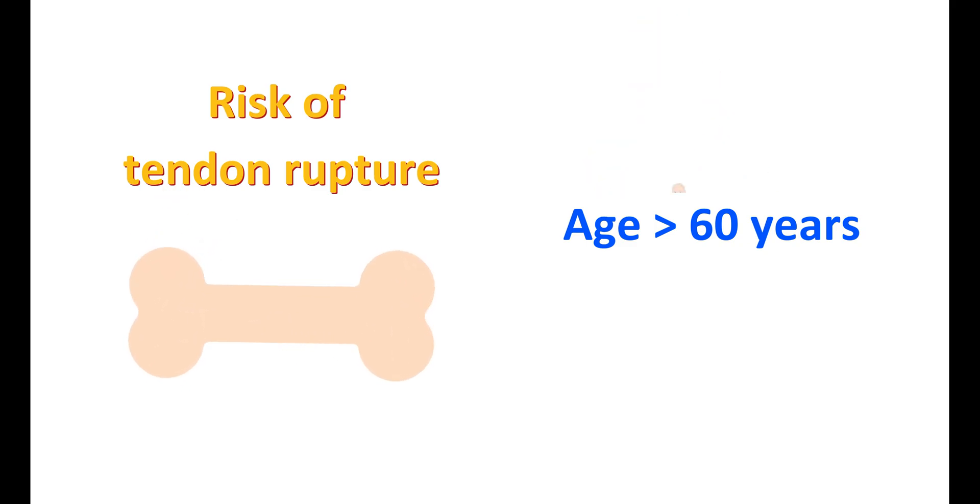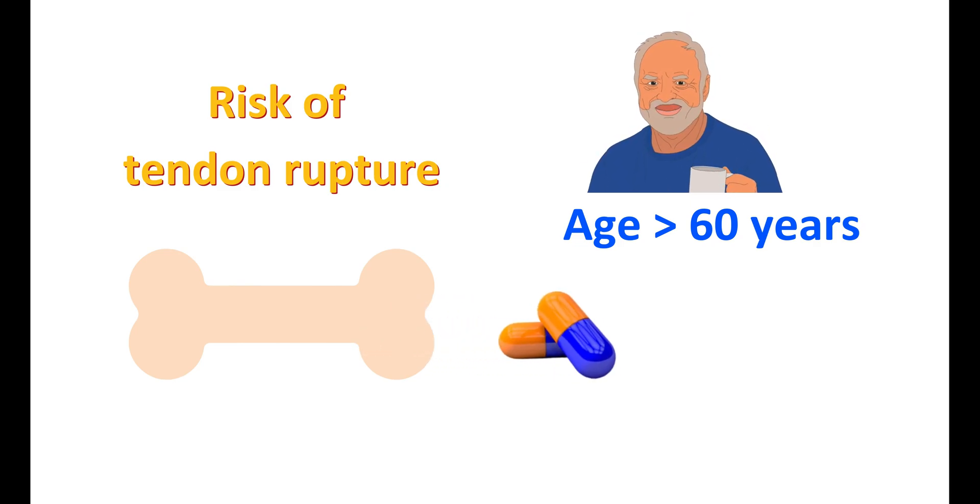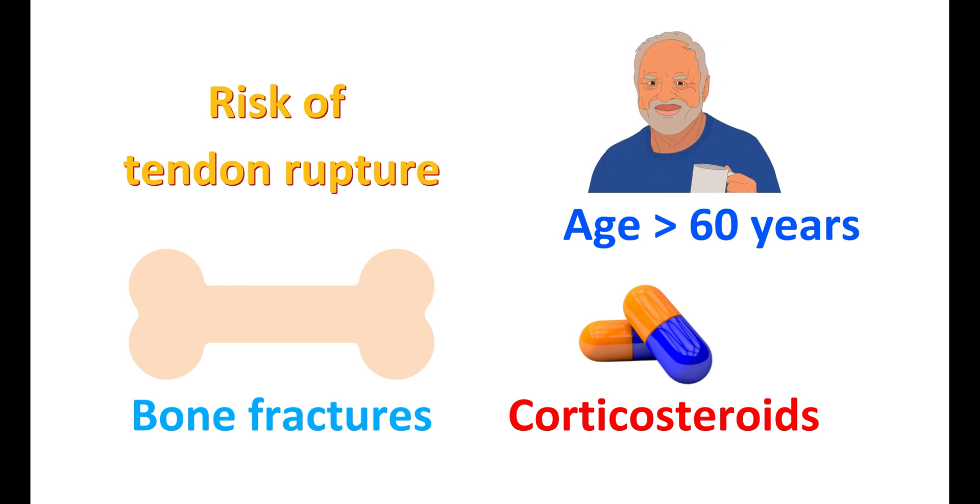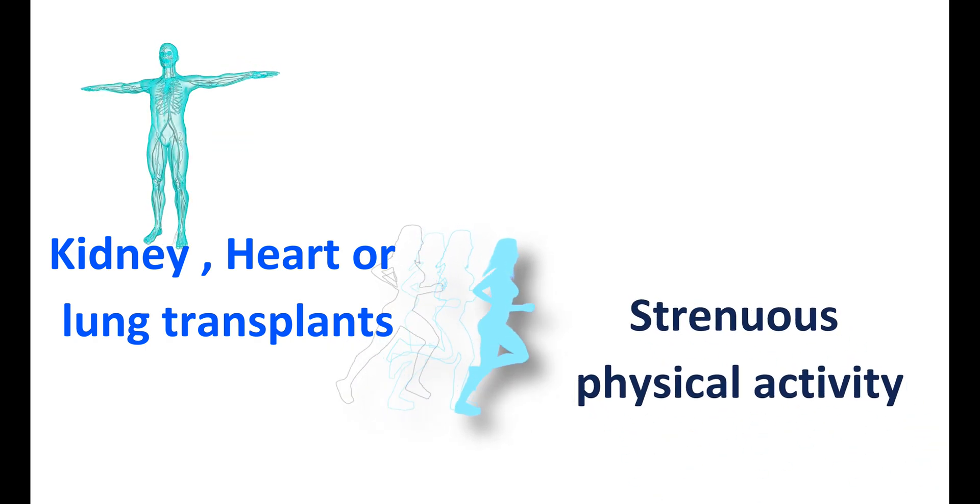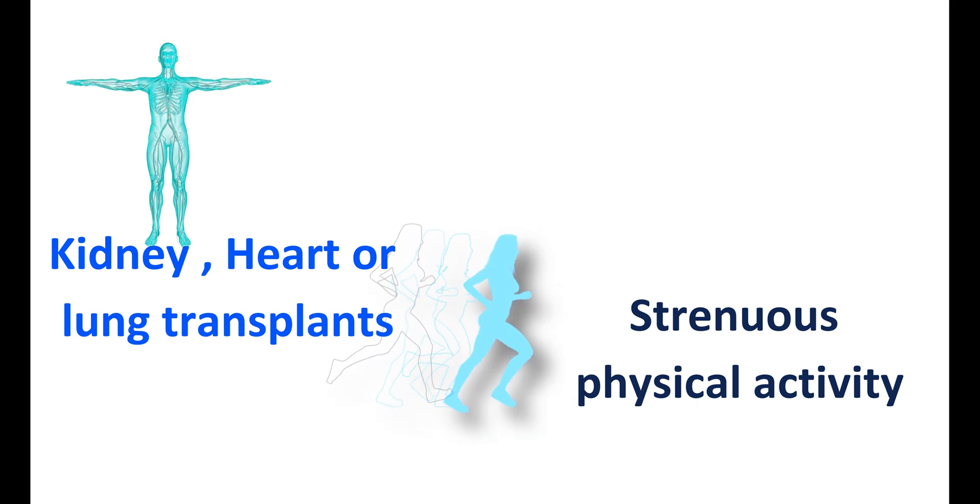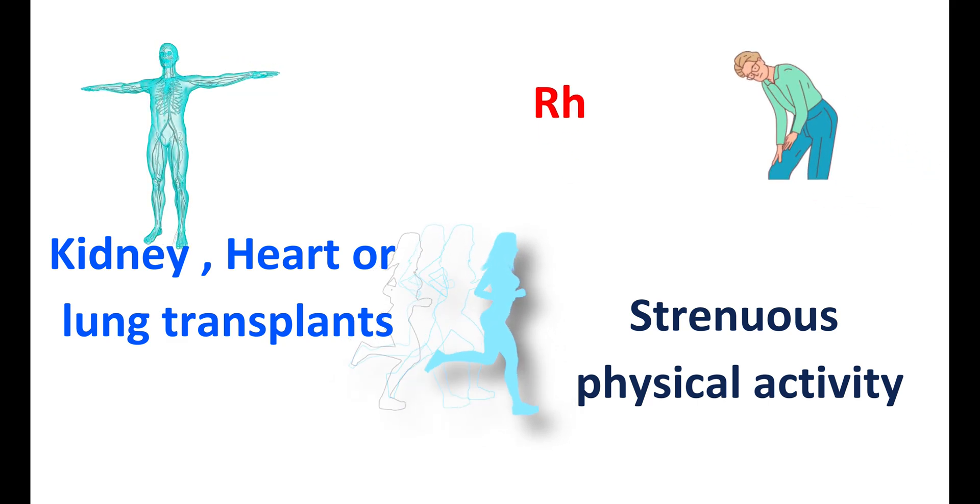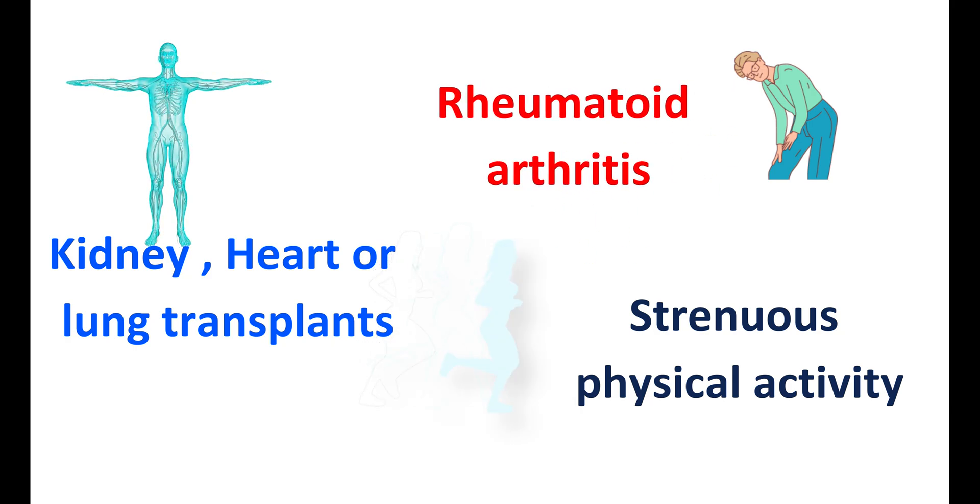A few risk factors can also increase tendon rupture. Particularly medications like corticosteroids can increase bone fractures by reducing bone mineral density. Even in people with kidney, heart or lung transplants, the risk of bone fractures may be increased. People with strenuous physical activity may also have increased risk of tendon rupture while taking this medication. Any previous history of tendon disorders like rheumatoid arthritis can also increase the risk.